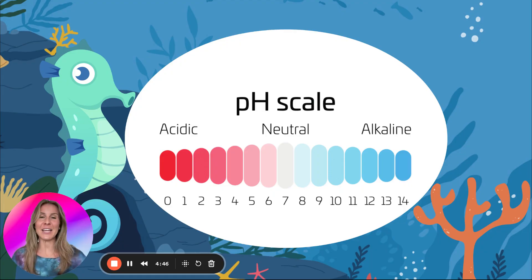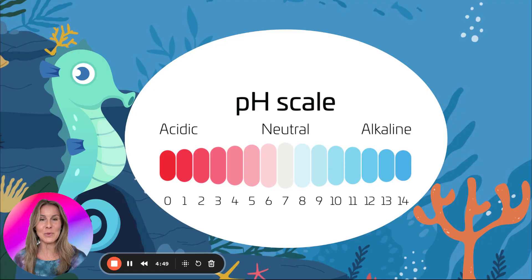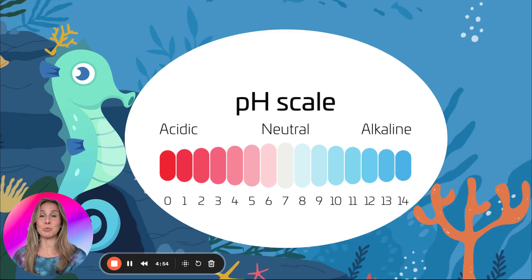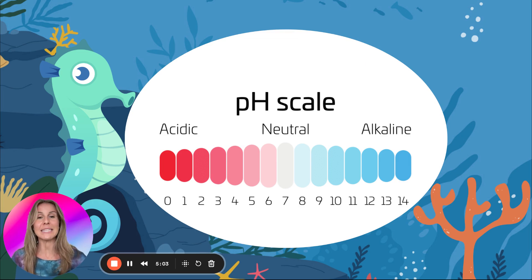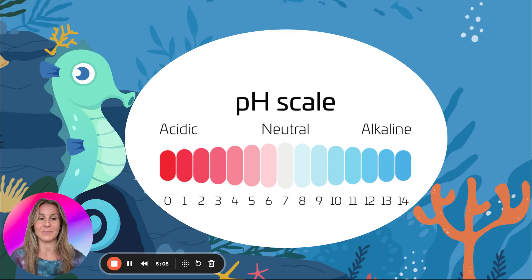You are expected to know the pH scale. Zero to 6.9 is acidic, with 0 being stronger than 6.9. Neutral is 7. Alkaline, or basic, is 7.1 to 14, with 14 being a strong base.